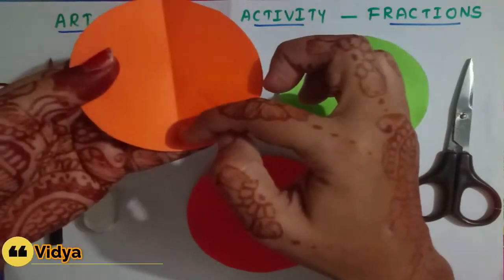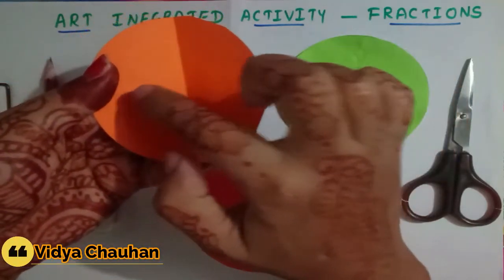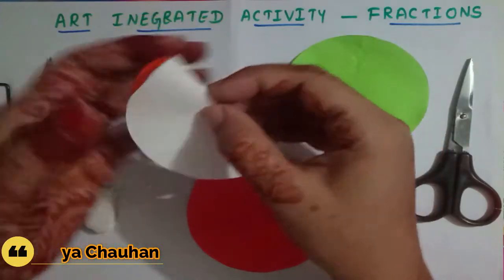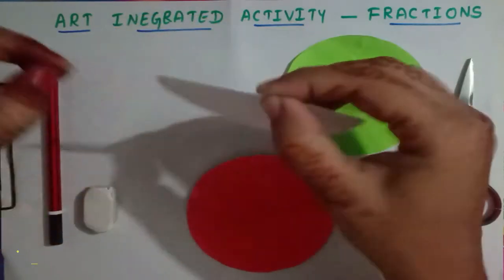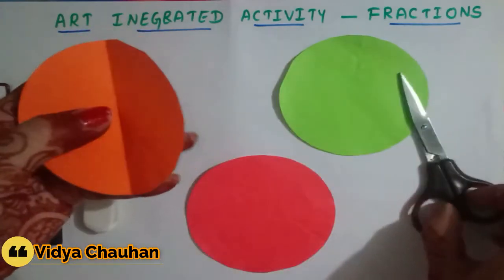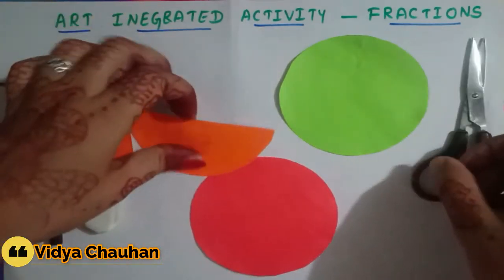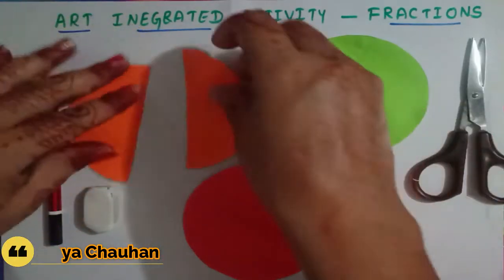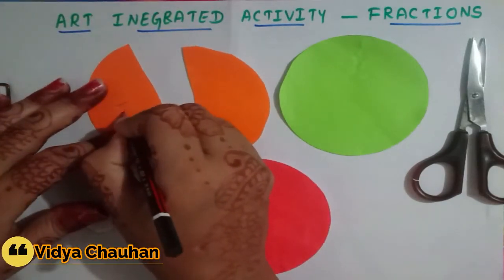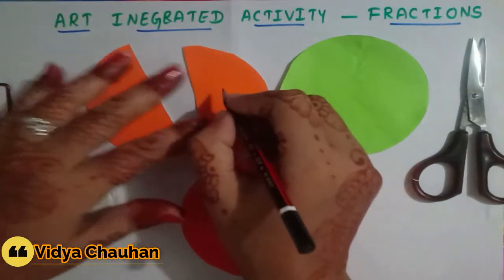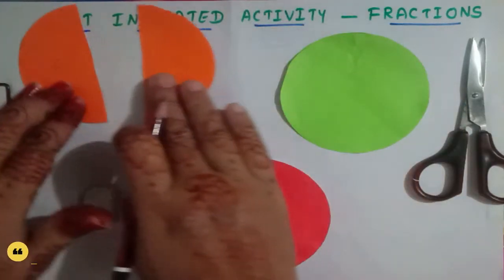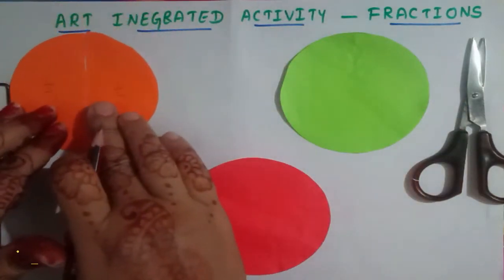There is a line in the middle which divides the complete whole into two equal halves. Let us cut this into two equal halves. These are the two halves — since it is half, it is one upon two and one upon two. This is our first part.